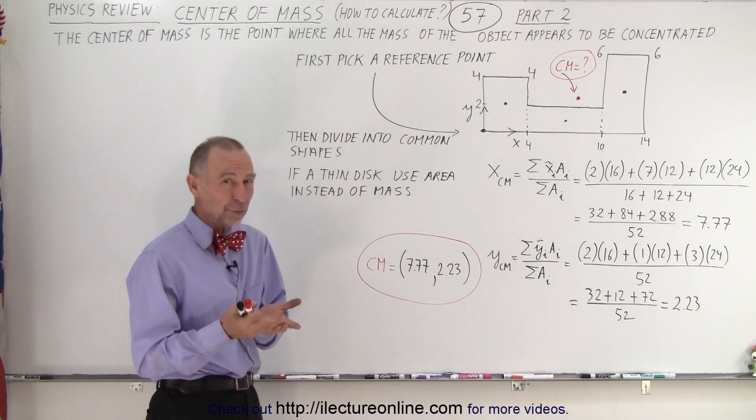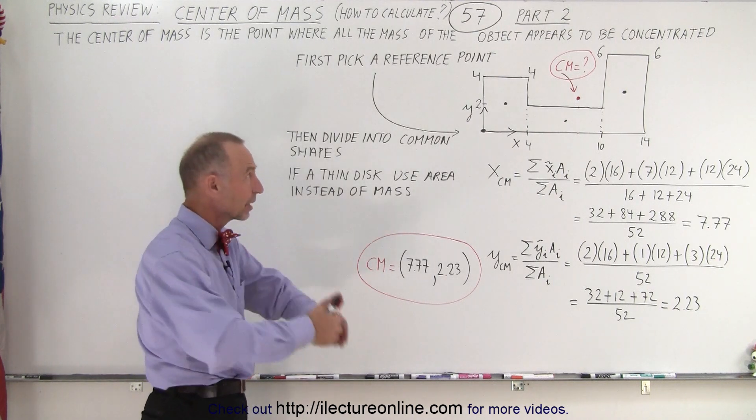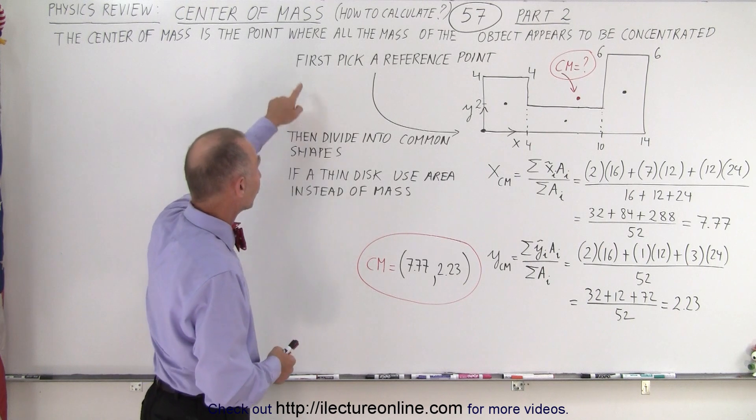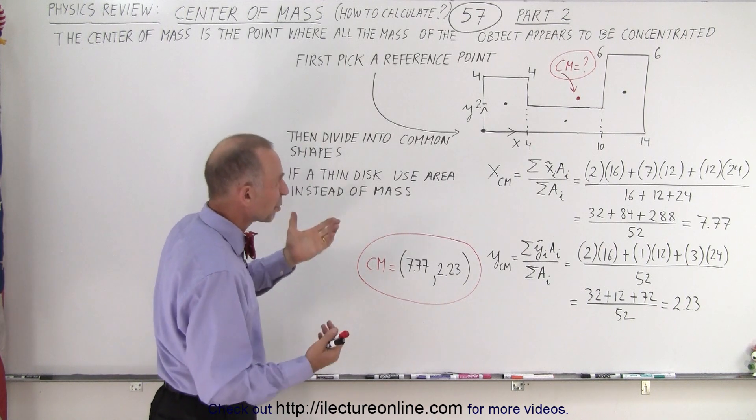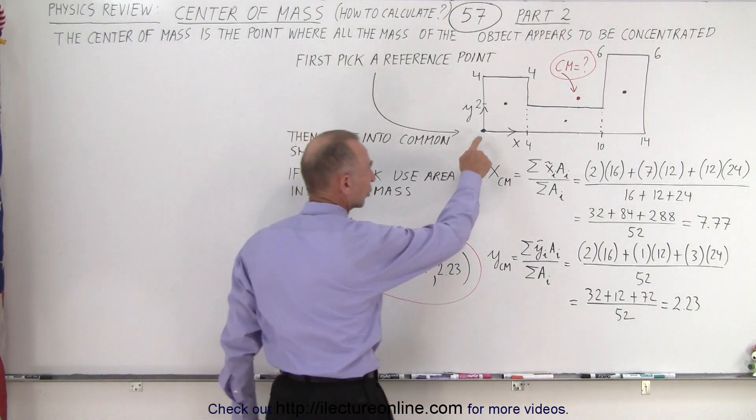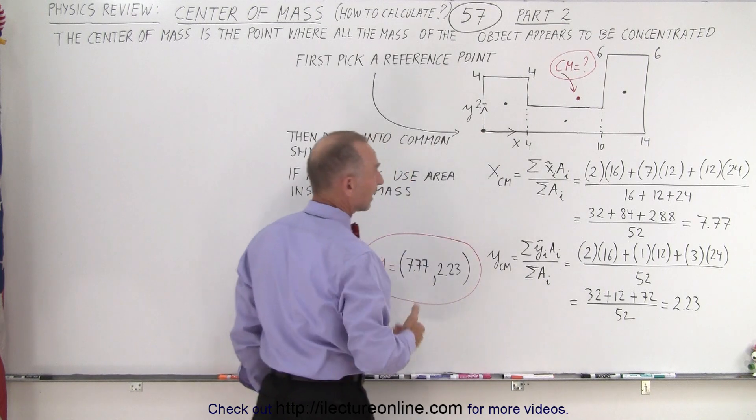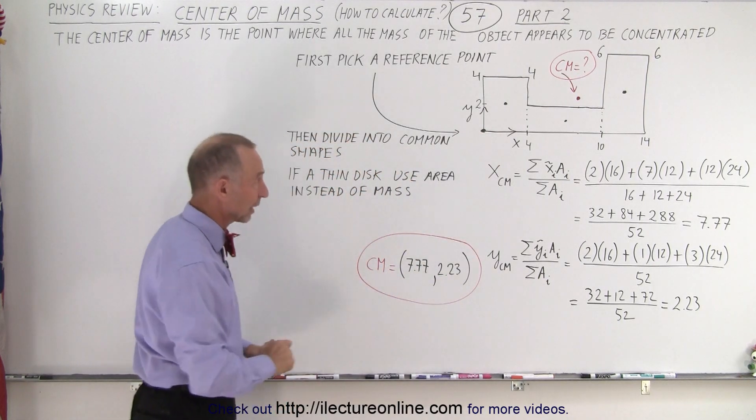Again, the center of mass is the point where all the mass of the object appears to be concentrated. And the way to go about it is first pick a reference point. So what we want to do is probably put the origin at like the corner of the object and then assume an x and a y-axis from that origin.